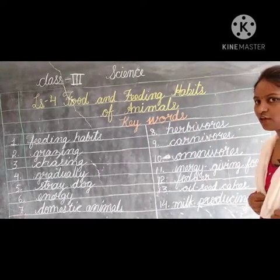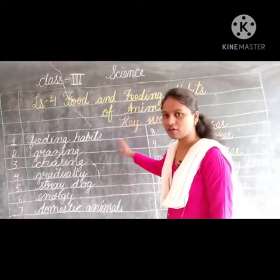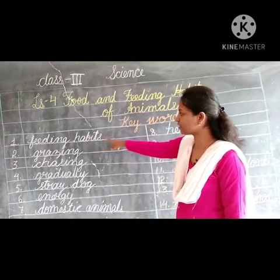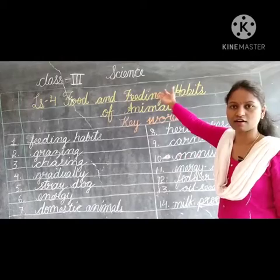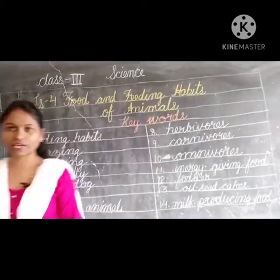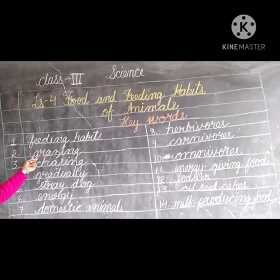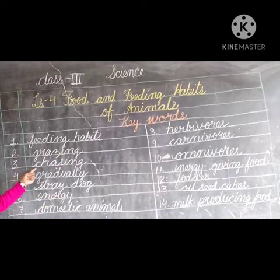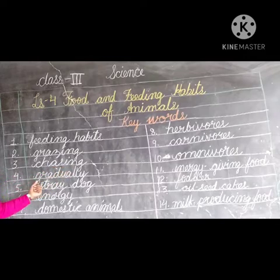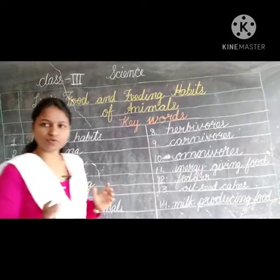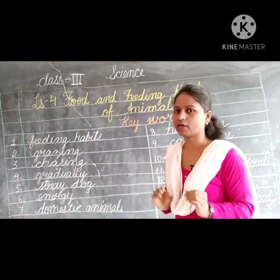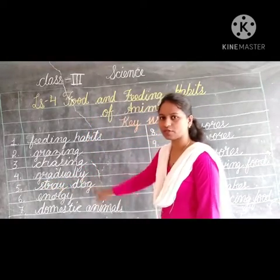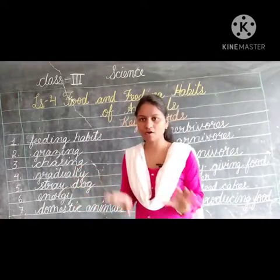Now we are going to learn what keywords are in this chapter. First one is 'feeding habits' - F-E-E-D-I-N-G, feeding, H-A-B-I-T-S, habits. Next one is 'grazing' - G-R-A-Z-I-N-G. Next is 'chasing' - C-H-A-S-I-N-G. Next, 'gradually' - G-R-A-D-U-A-L-L-Y. Gradually means slowly. You can pause the video and write these words.